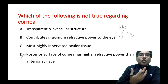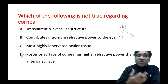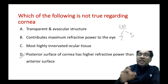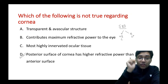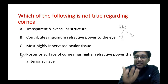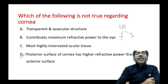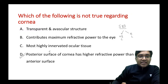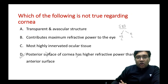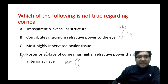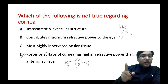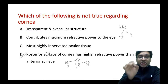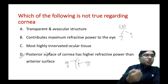The cornea is the most highly innervated ocular tissue — in fact, one of the most highly innervated organs in the body. Even a small touch causes a blink reflex. The nasociliary nerves supply the cornea. Now, the posterior surface of the cornea having higher refractive power than the anterior surface is the wrong option — because the anterior surface has around 48 diopters and the posterior surface has minus 5 diopters. So it is the anterior surface that gives the cornea its refractive power of about 43 diopters. My answer is D.